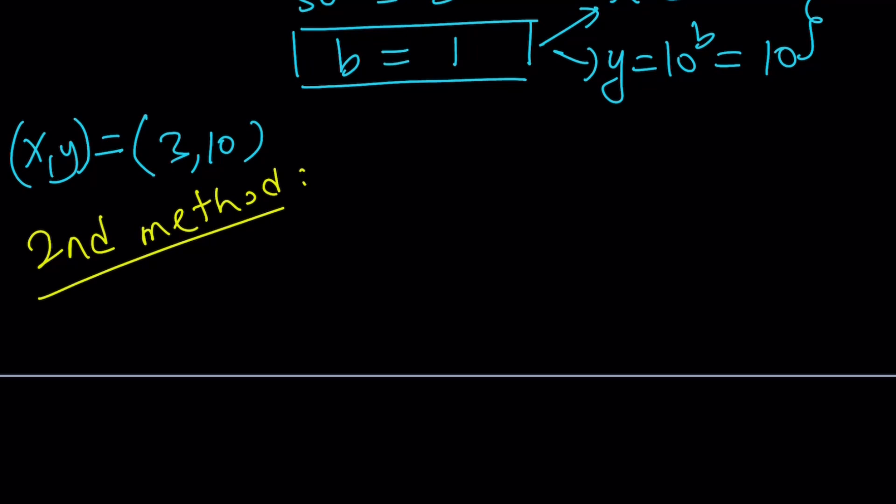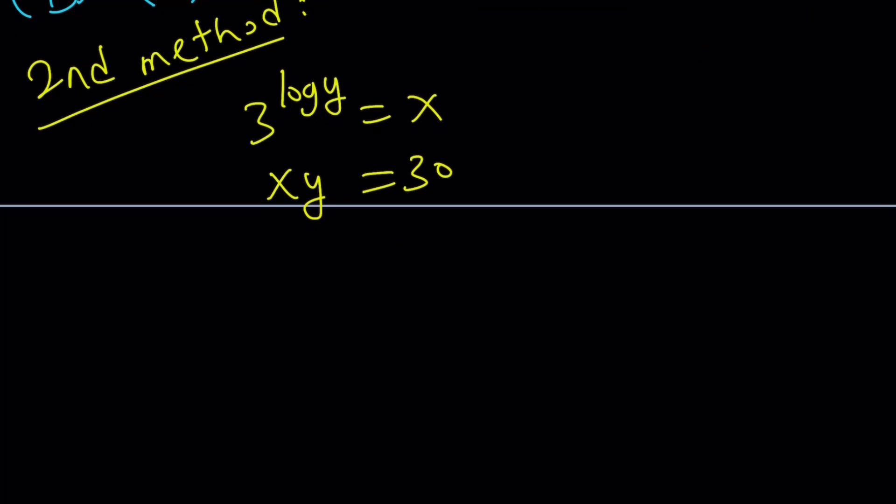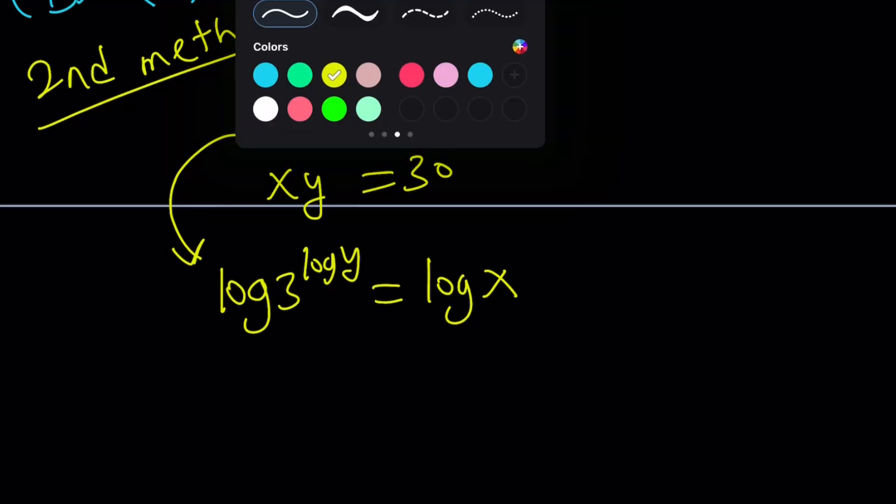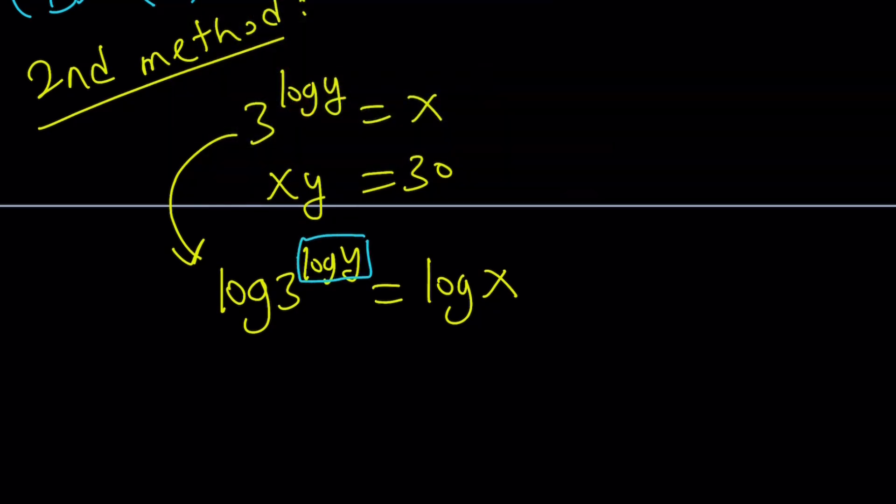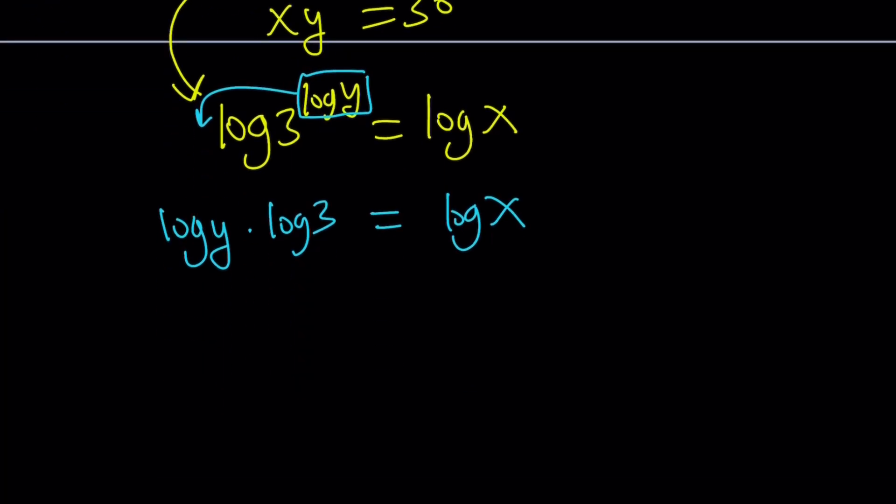For my second method, let me rewrite the problem. 3 to the power log y equals x and x, y equals 30. I'm just going to do the following. I'll take the first equation and just log both sides. Log 3 to the power log y equals log x. By the way, log means base 10 here. When the base is not written, it's usually base 10. Now, properties of logs allow us to bring this down. If you do bring it down, we're going to get log y times log 3 equals log x. Now, this gives us something nice, but let's leave it at that for now. Let's focus on the second equation.